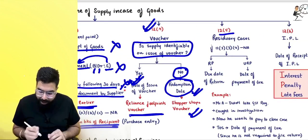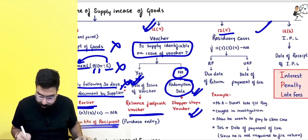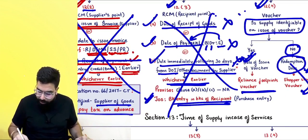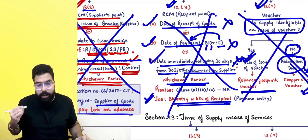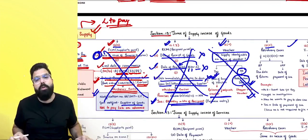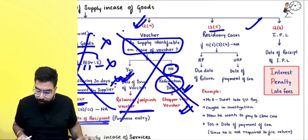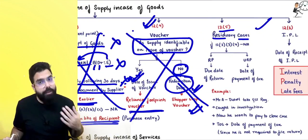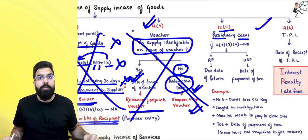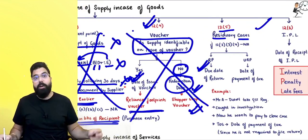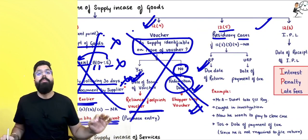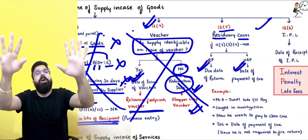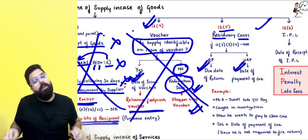Section 12.5 covers residuary cases — if you don't fall under 12.2, 12.3, or 12.4. If you are a registered person, your time of supply is the due date of return. If you are an unregistered person, the day you make the payment is your time of supply. For example, if Mr. A has not taken registration but is caught in an investigation and wants to pay and close, the officer will say: the day you pay, that becomes your time of supply.